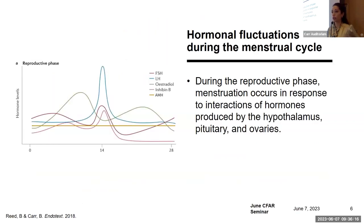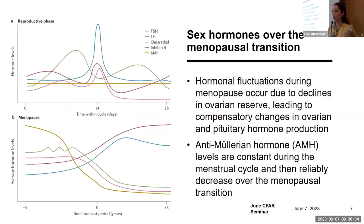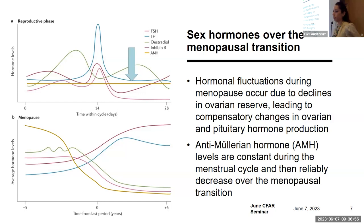One of the challenges in categorizing menopause has to do with hormonal fluctuations. During the reproductive phase, menstruation occurs in response to interactions of hormones produced by the hypothalamus, pituitary, and ovaries. During the menopausal transition, hormonal fluctuations occur due to declines in ovarian reserve, leading to compensatory changes in ovarian and pituitary hormone production. I want to bring your attention to anti-Müllerian hormone — the orange line — which remains constant during the menstrual cycle during the reproductive phase, and then reliably decreases over the menopausal transition, making it an intriguing biomarker for determining menopausal phase.